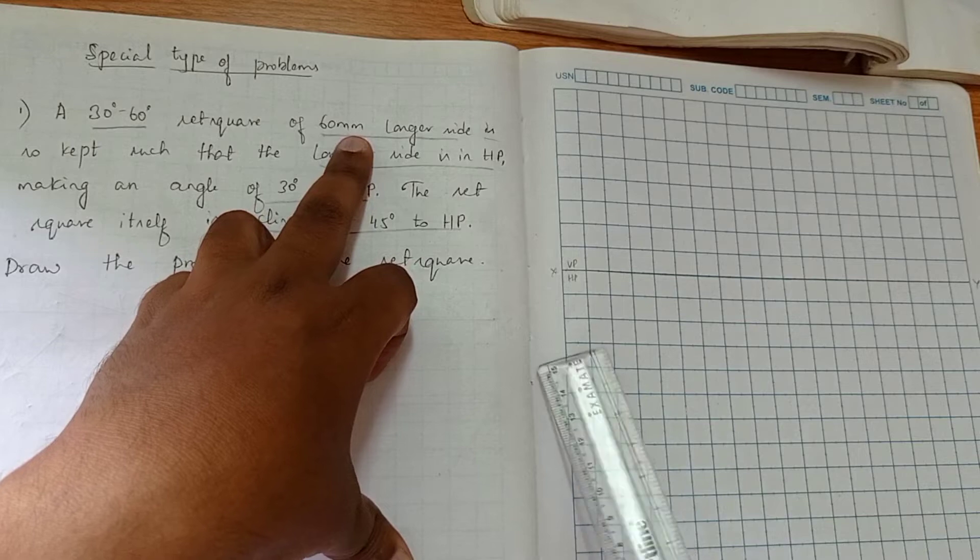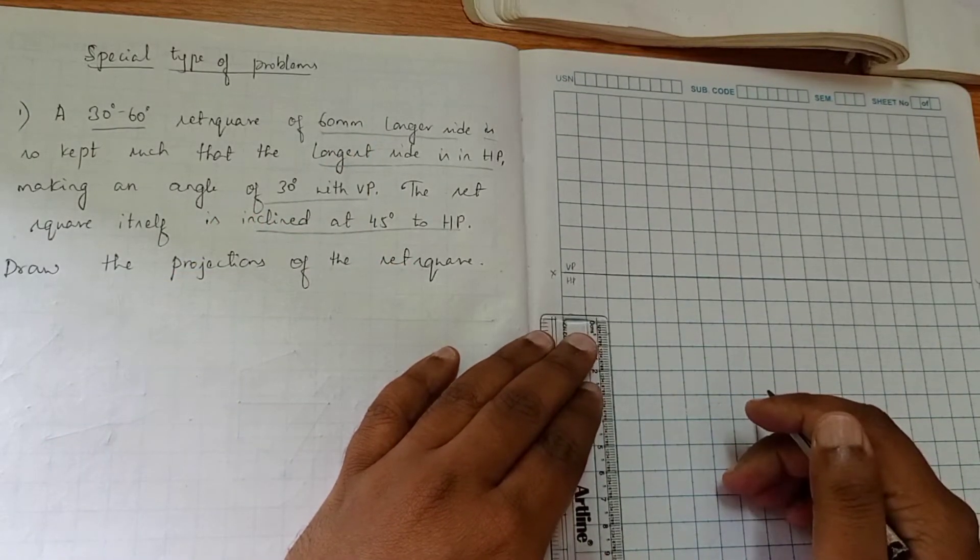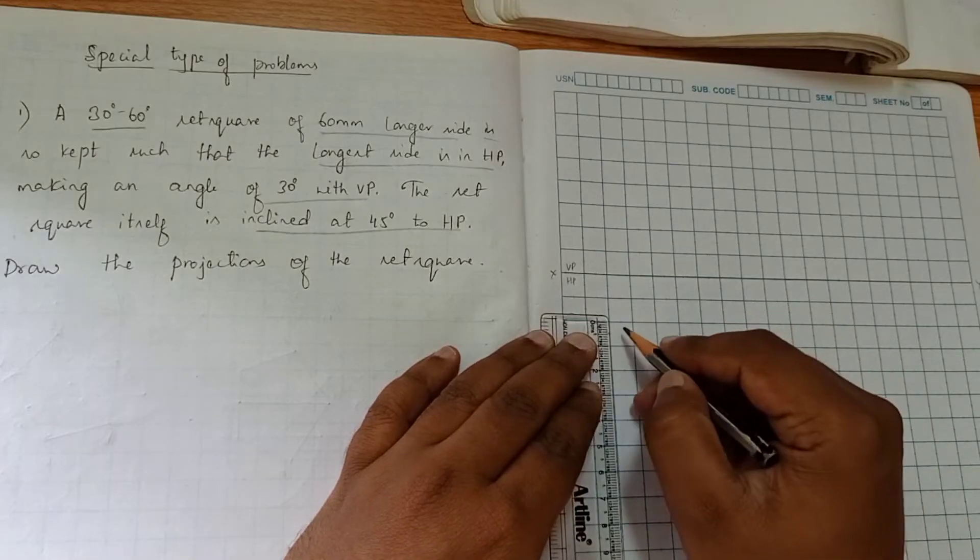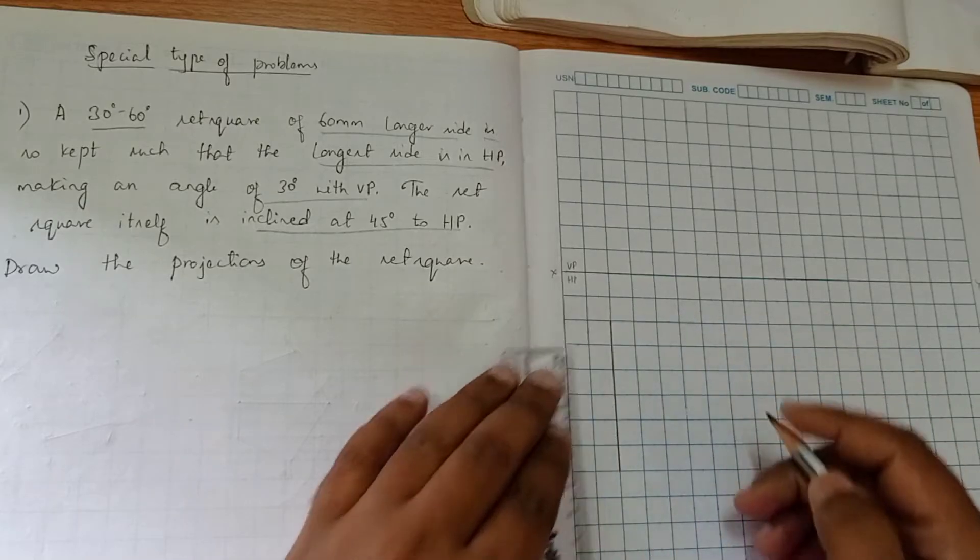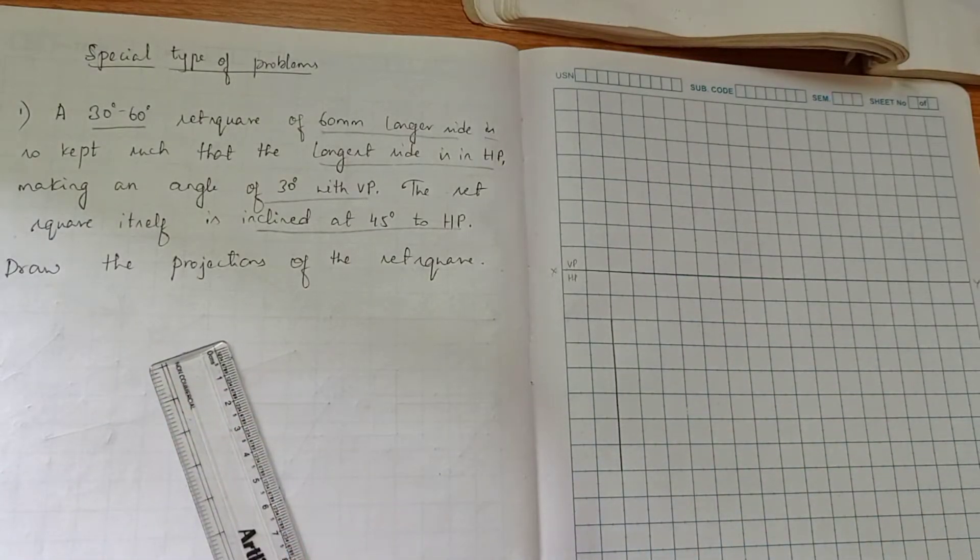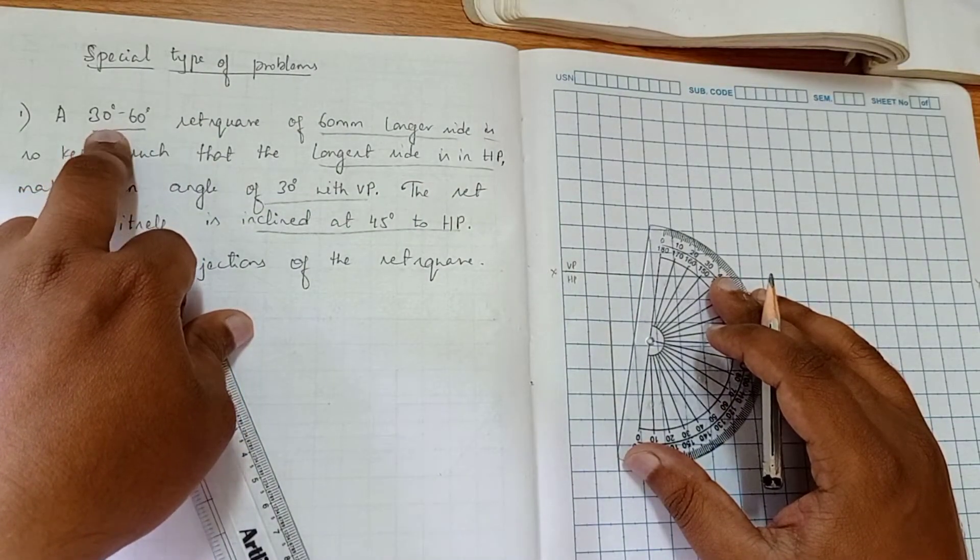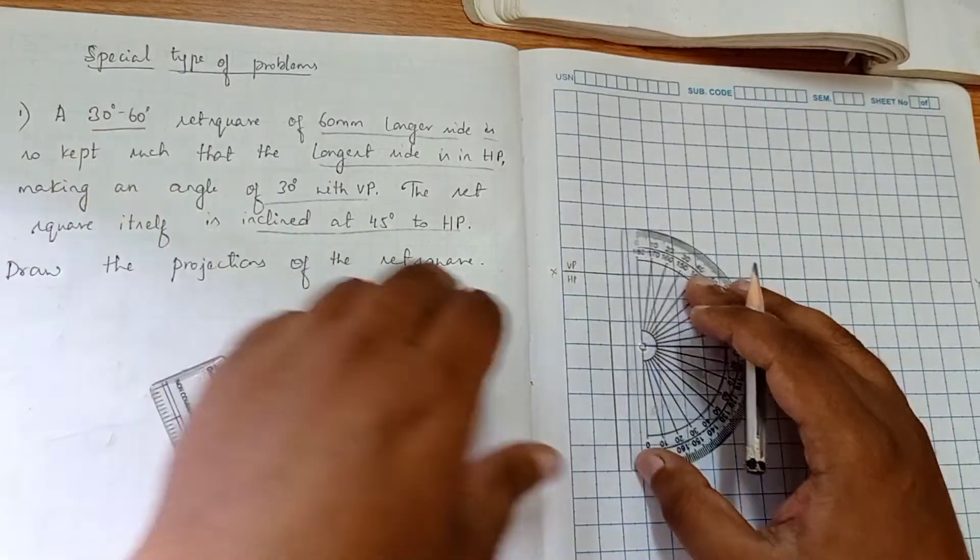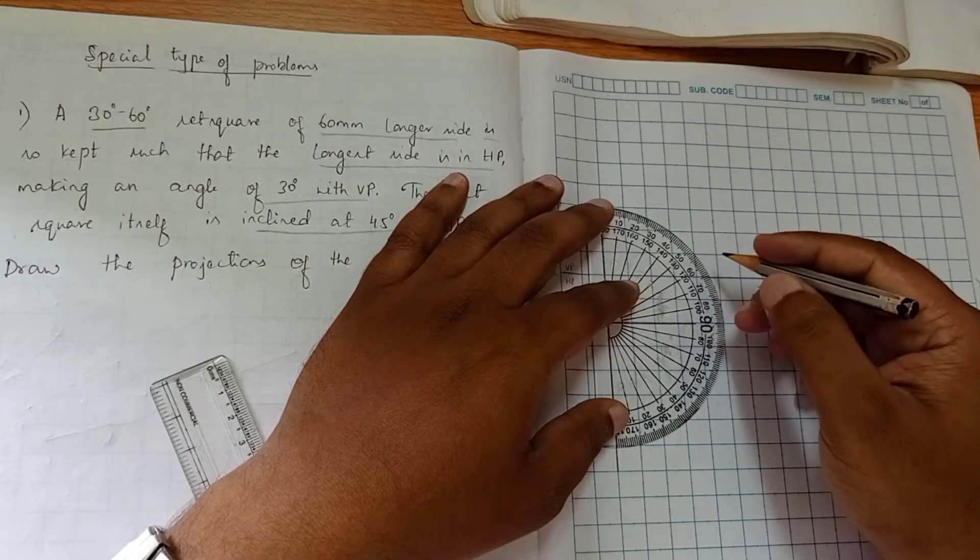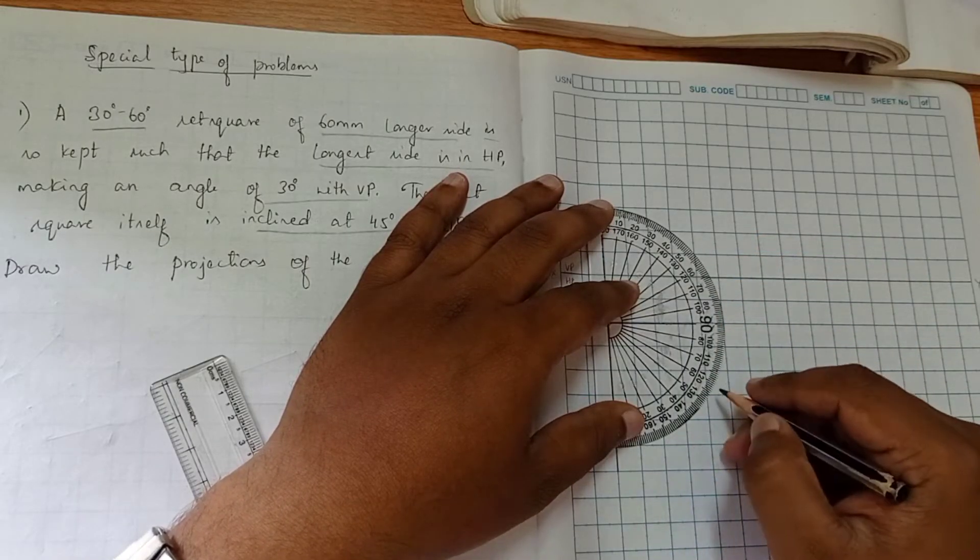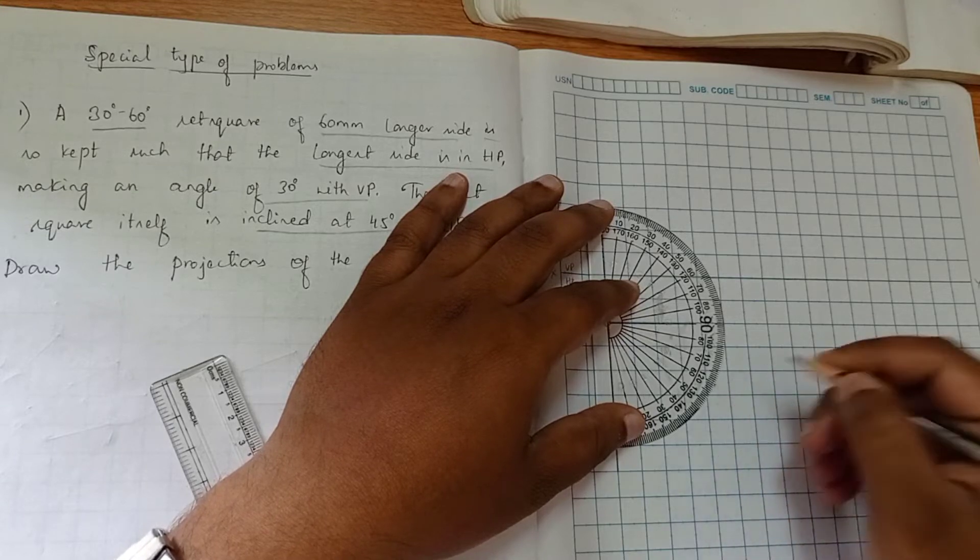So how to construct? You can see that first we consider the longer side of 60mm. So longer side 60, I have drawn. Now you can see 30 degrees - this is the internal angle. So the external angle will be 60 degrees. So from here you can mark for 60.